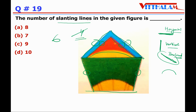Then after that, here we have seven and eight — these two more slanting lines. Then the standing line we will not count. Then after eight, we have nine and ten — two more. So total slanting lines so far is ten.